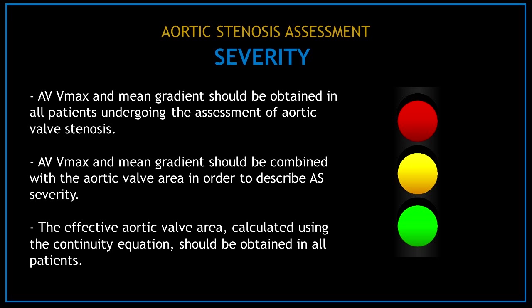Once you finish the visual and Doppler assessments, you can grade the severity of the aortic stenosis. Key points: Aortic valve Vmax and mean gradient should be obtained in all patients and combined with the aortic valve area to describe severity. The effective aortic valve area calculated using the continuity equation should also be obtained in all patients.